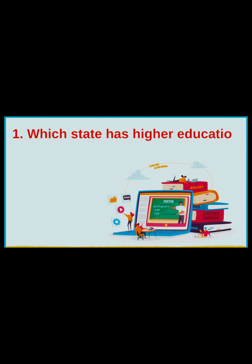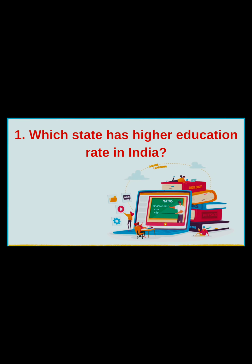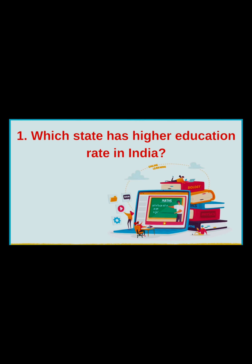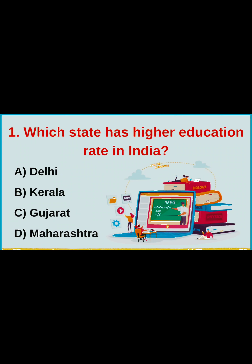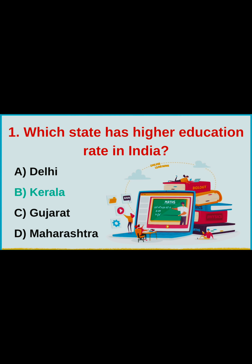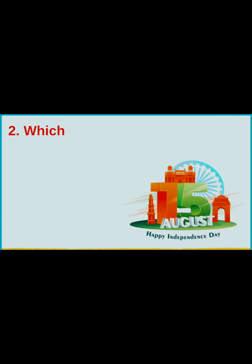Question number 1: Which state has the higher education rate in India? Your options are: A. Delhi, B. Kerala, C. Gujarat, D. Maharashtra. The correct answer is option B, Kerala.